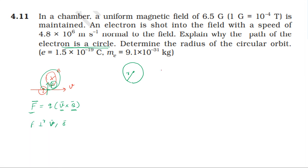Now, for circular motion, the centripetal force equals the magnetic force. So radius r equals M V divided by Q B.